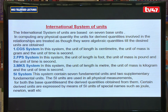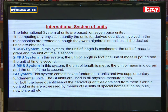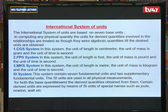We have three systems of units. The first is the CGS system, in which the unit of length is centimeters, the unit of mass is grams, and the unit of time is seconds. The second is the FPS system, where length is in feet, mass in pounds, and time in seconds. The third is the MKS system, where length is in meters, mass in kilograms, and time in seconds.